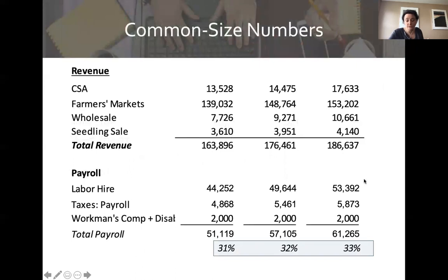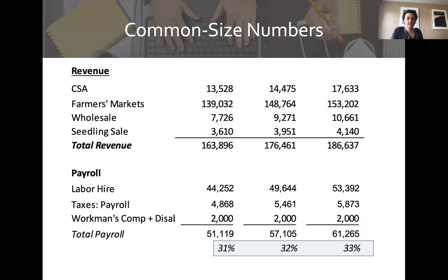Payroll is going up and we might think okay, revenue is going up so we're not too worried. But if we look at payroll as a percentage of revenue, we can see that payroll in year one is 31% of revenue, in year two it's 32%, and in year three it's 33%. So not only is payroll going up, it's going up at a greater pace than revenue. When we look at our financial statements, number one we want to look at trends, but we also want to look at numbers relative to revenue — that's what allows us to compare year over year.